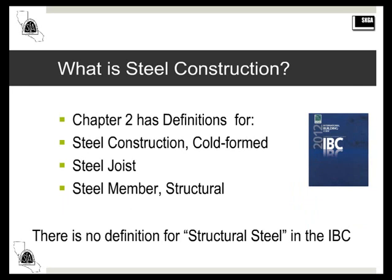So what constitutes structural steel, and what is included in the 'other than' category? Let's start with Chapter 2 definitions. In the 2012 IBC, Chapter 2 has definitions for steel construction cold-formed, steel joists, and steel member structural. You know what these are — I'm not going to show the full definitions.